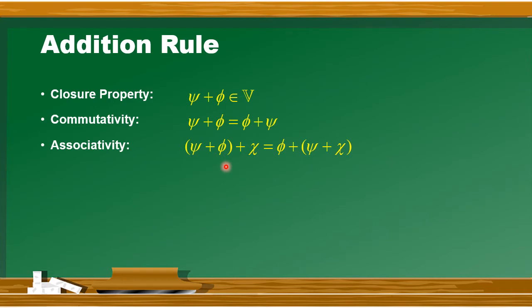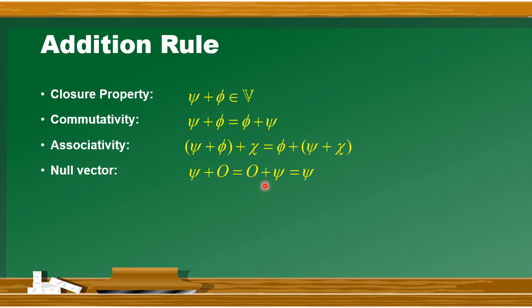तो next addition rule की property देखते हैं - वो है null vector. अब null vector क्या है? इस vector space के अंदर कोई ऐसा vector exist करेगा कि उसको इस vector space के किसी भी element में add करें, either on right side or on left side, तो उसके result पे कोई effect नहीं होगा - आपको वापस वो ही vector मिल जाएगा. तो यहाँ पर O को null vector का नाम दिया जाएगा.